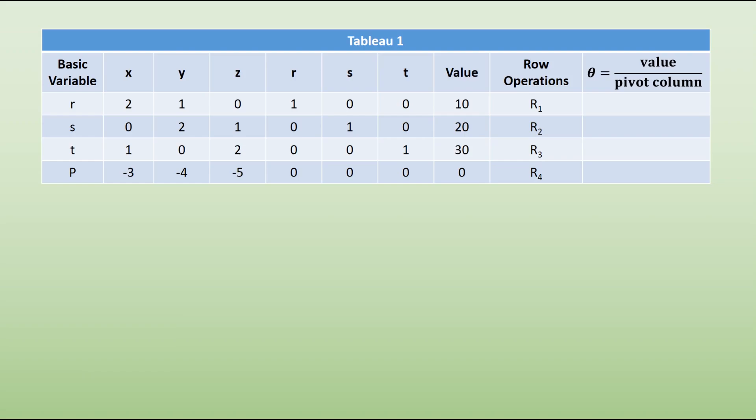Moving on to our first tableau and actually working with this. I've now added a label to the column where I've named each of my rows, called it row operations. I've also added a column for the theta values — a reminder that we're going to do the value divided by the pivot column value. The first thing we do is identify the column that has the most negative value in the objective row. Looking along it, we have negative 3, negative 4, negative 5 for x, y, and z, so negative 5 is the most negative value. This is going to be our pivot column.